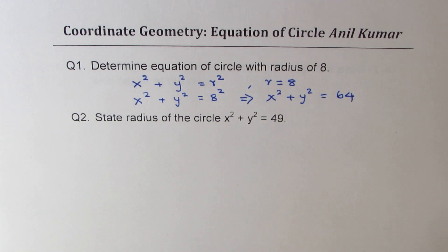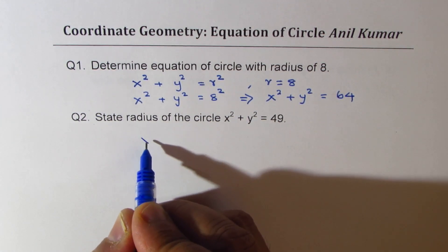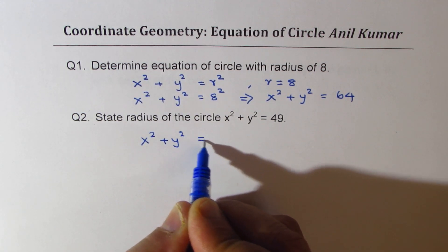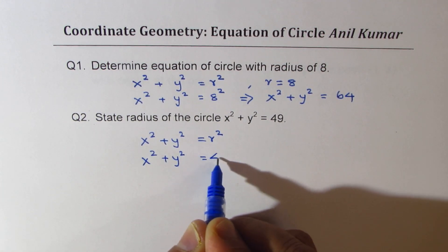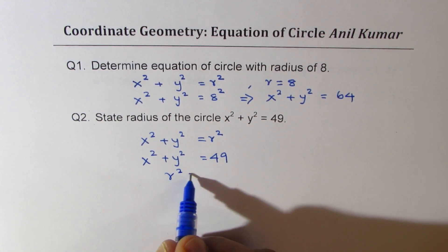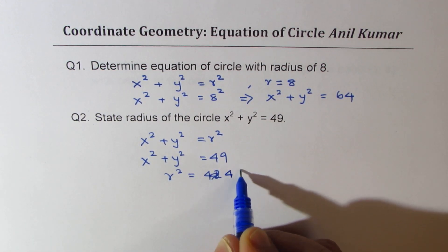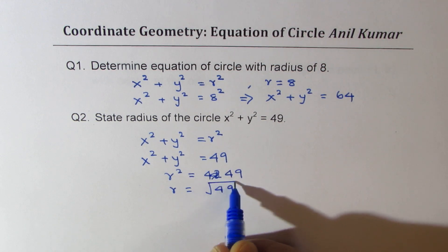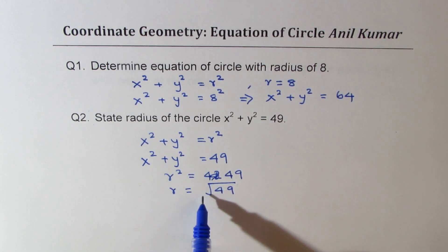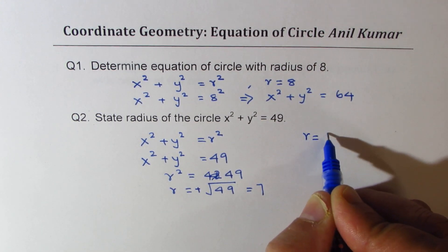Question number two: state the radius of the circle x squared plus y squared equals 49. We know the equation is x squared plus y squared equals r squared. Comparing, r squared equals 49, and therefore r equals the square root of 49. Remember, radius is always positive, so we take the positive value, which is 7. So radius r equals 7 units.